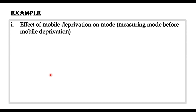Let us understand the pre-test post-test design from some examples. Going to our previous example — the effect of mobile deprivation on a person's mood — to perform this experiment with the second experimental design, we will first measure the mood before the mobile deprivation. Then the group is deprived of the mobile, and then the mood is measured again after the deprivation. So we are in a better position to find the effect of mobile deprivation on the person's mood.